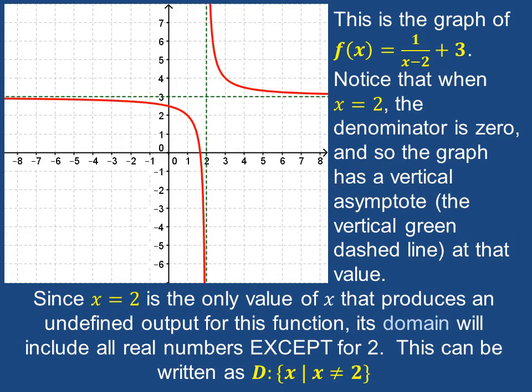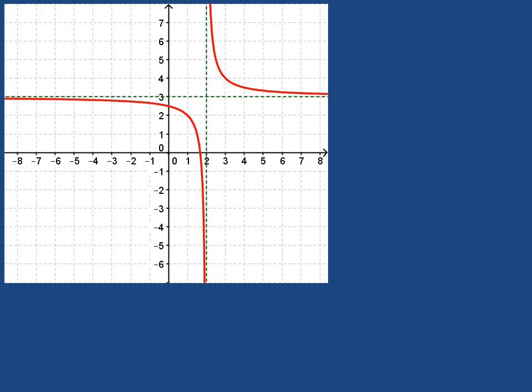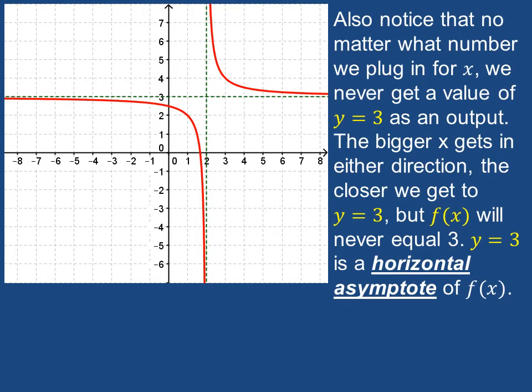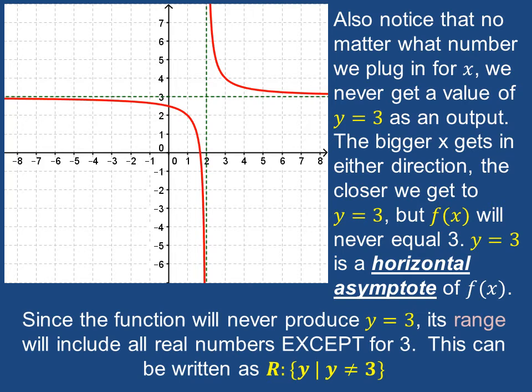Let's consider the range of this function now going in the vertical direction for the Y values. Notice that no matter what number we plug in for X, we'll never get a value of Y equals 3 as an output. The bigger X gets in either direction, the closer we'll get to a value of Y equals 3, but F of X will never equal 3. Therefore, Y equals 3 is a horizontal asymptote of F of X. Since the function will never produce Y equals 3, its range will include all real numbers except for 3. This can be written as shown at the bottom of this screen.